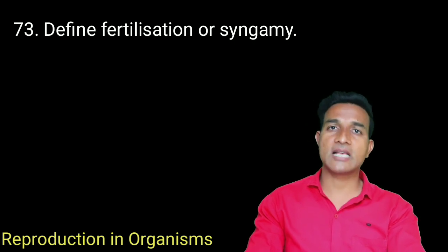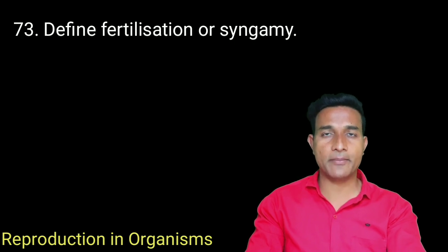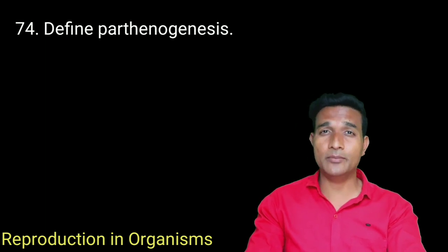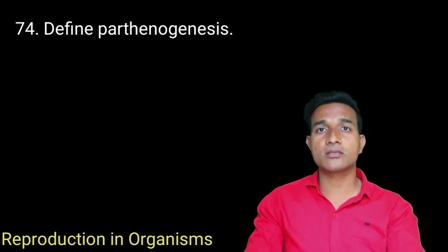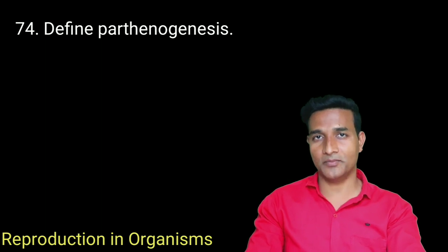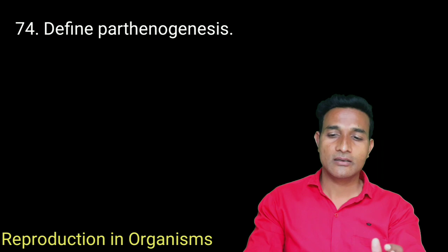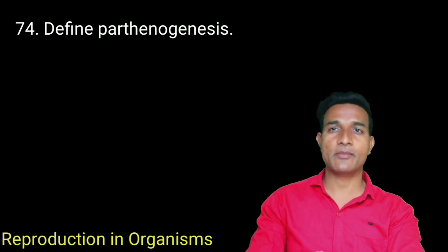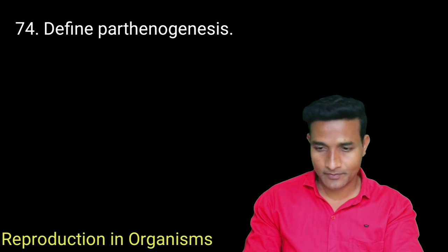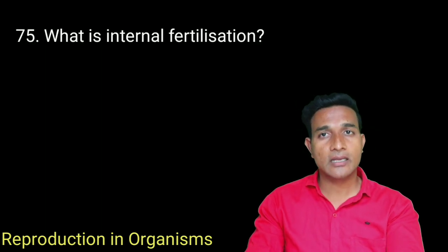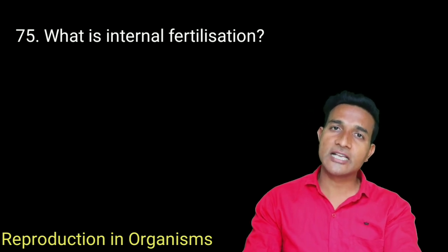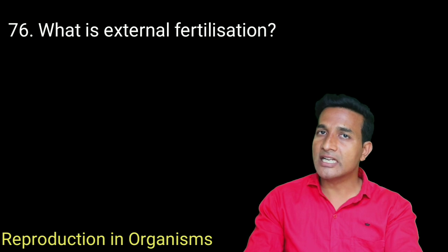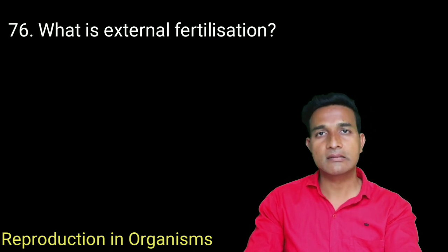Define fertilization or syngamy — the fusion of male and female gametes. In some organisms like rotifers, honey bees, or some lizards, the female gamete undergoes development to form a new organism without fertilization; this is called parthenogenesis. What is internal fertilization? If fertilization takes place inside the female body, it is called internal fertilization. What is external fertilization? If the fertilization takes place outside the body, it is called external fertilization.